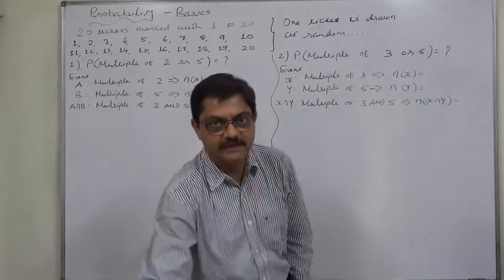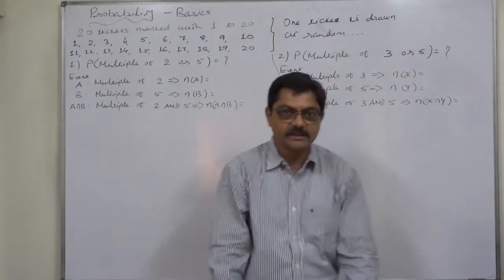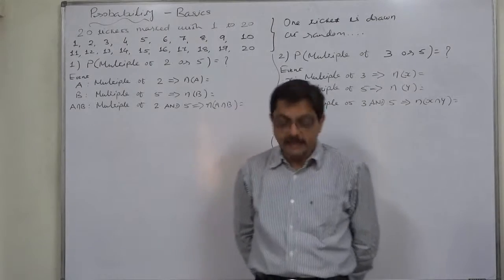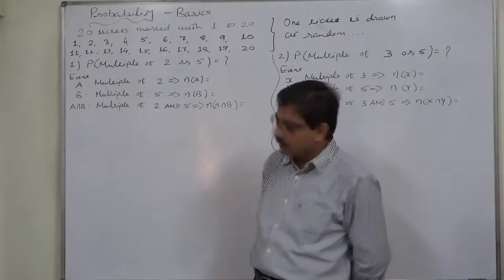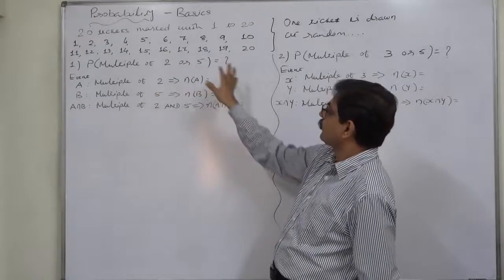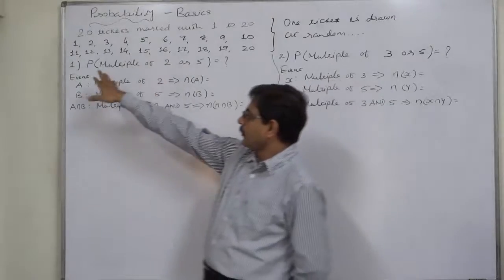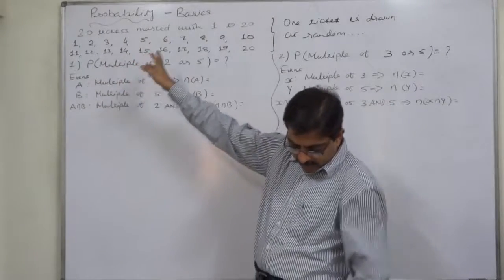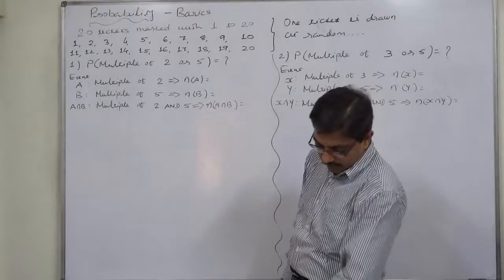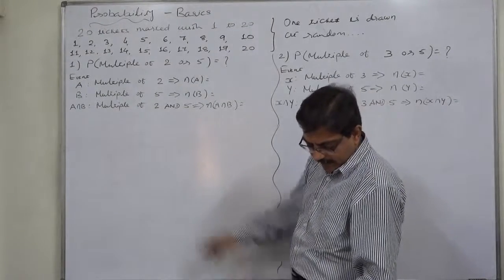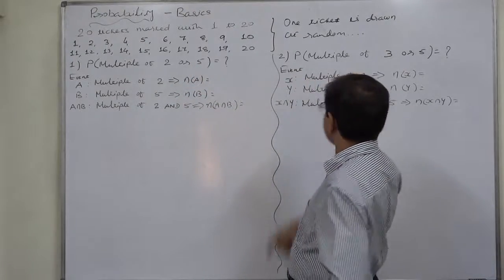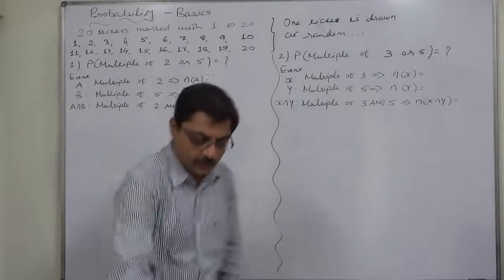The next case in the segment of basics of probabilities: a bag contains 20 tickets marked with 1 to 20 — that means on each ticket a number from 1 to 20 has been written or printed. One ticket is drawn at random. Find the probability that it will be (1) a multiple of 2 or 5, and (2) a multiple of 3 or 5.